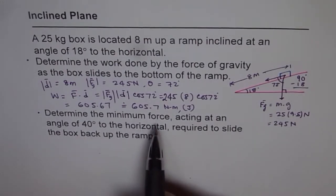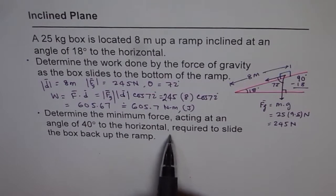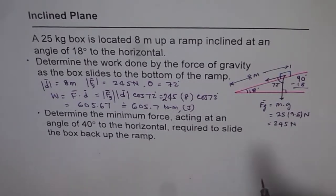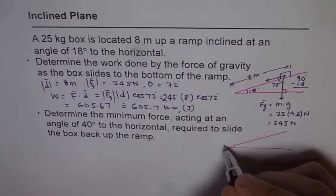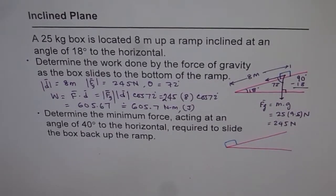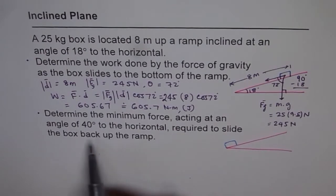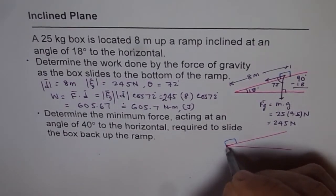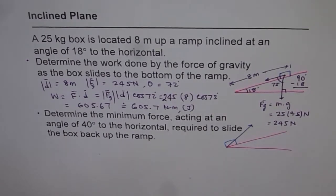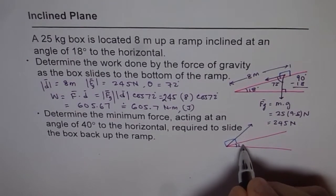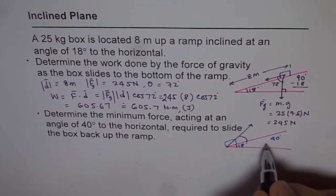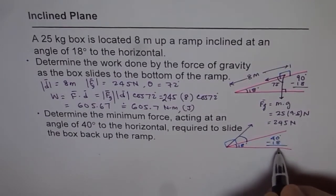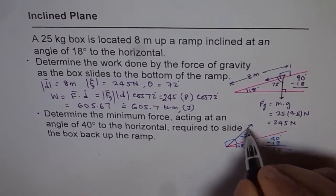Part 2: determine the minimum force acting at an angle of 40 degrees to the horizontal required to slide the box back up the ramp. The box is now at the bottom and we are trying to push it back up with a force acting at 40 degrees to the horizontal. We have the ramp angle of 18 degrees, and the total angle is 40 degrees, so the angle above the inclined plane is 40 minus 18, which gives us 22 degrees.